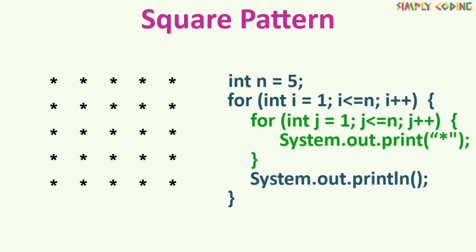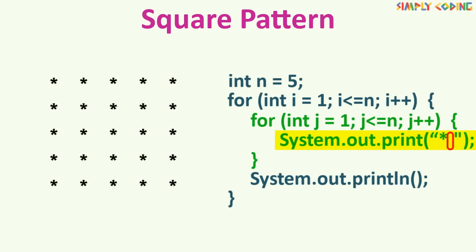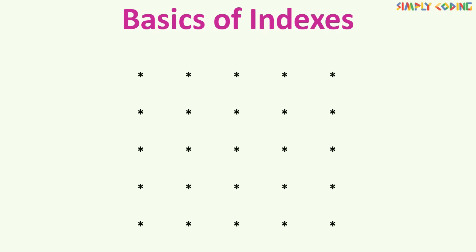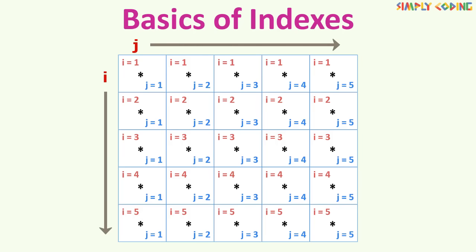If you run this code, you will see the output has stars too close together, giving an effect of a rectangle instead of a square. You can fix this by adding an extra space next to the star in the print statement. This is our final code to print a square. Now let's understand some basics of square indexes. We need two indexes i and j to go to a specific star. The first star is at row index i equal to 1 and column index j equal to 1. The next star is at i equal to 1 and j equal to 2, and so on.